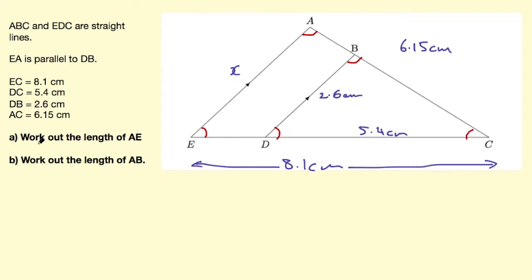So the first thing we would say is triangle ACE and triangle BCD are similar and then give the reason, angle angle angle.